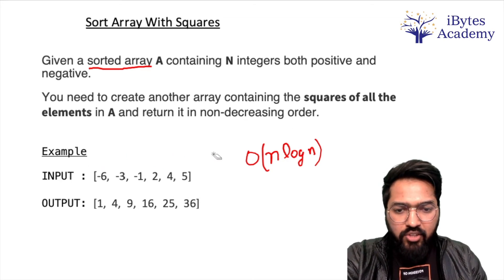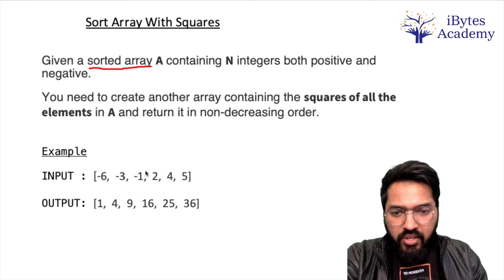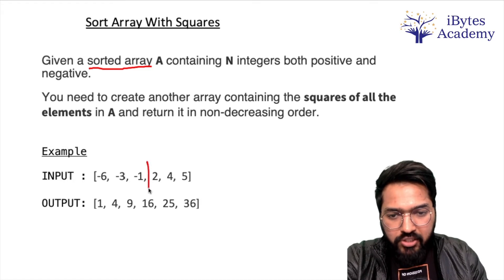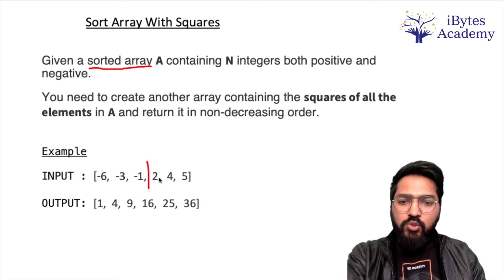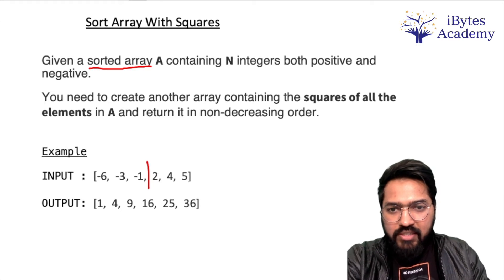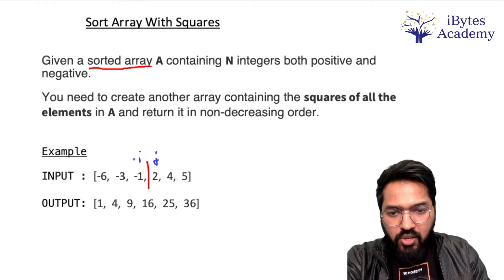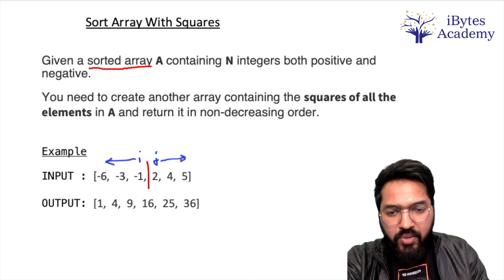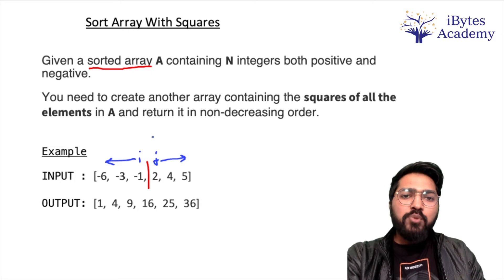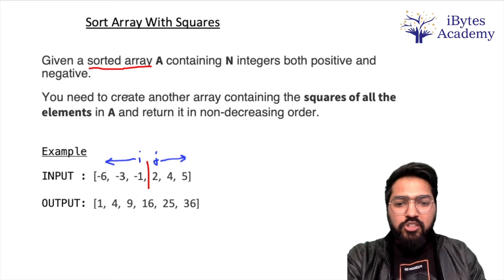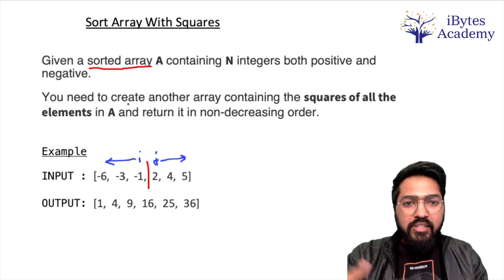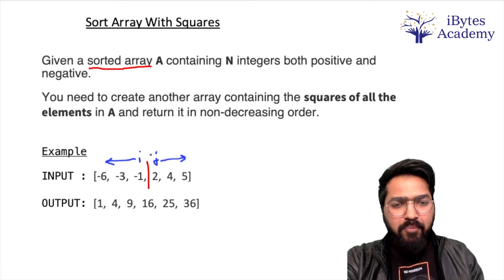So the algorithm we will be using is ki humm log iski pahle partitioning kar dein, negative numbers ko alag aur positive numbers ko alag. Let's say ek i shurru kar lenge yahan se aur ek j shurru kar lenge yahan se. So i hummara pichhe ki taraf jahe ga aur j hummara aaghe ki taraf jahe ga. Basically ho kya raha hai ki agar mein absolute values ki baat karthau toh j ke right me jaise mein ja raha ho toh badhti jah raha hai, similarly i ke left me jah raha ho woh badhti jah raha hai.